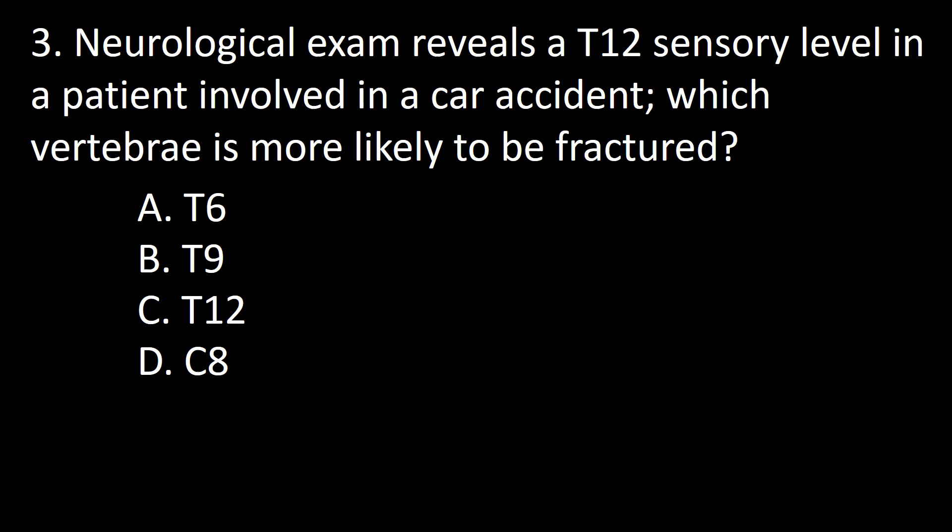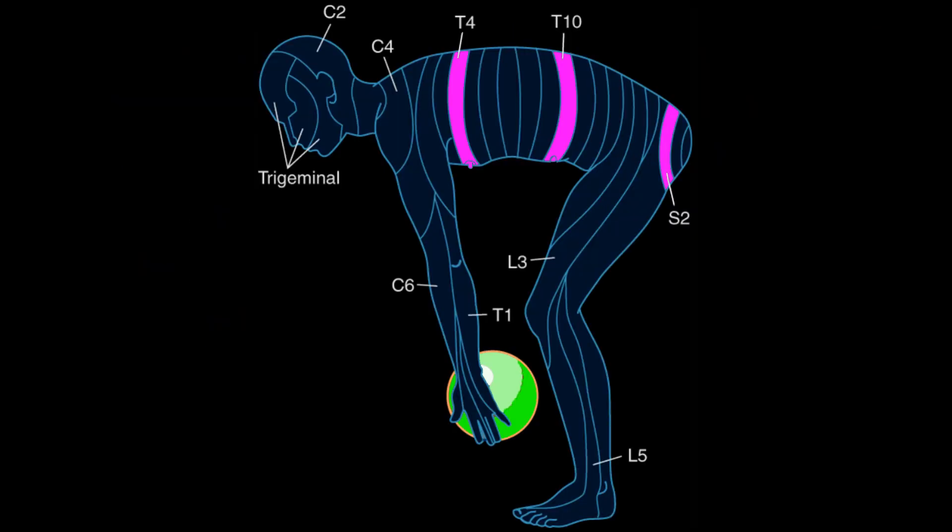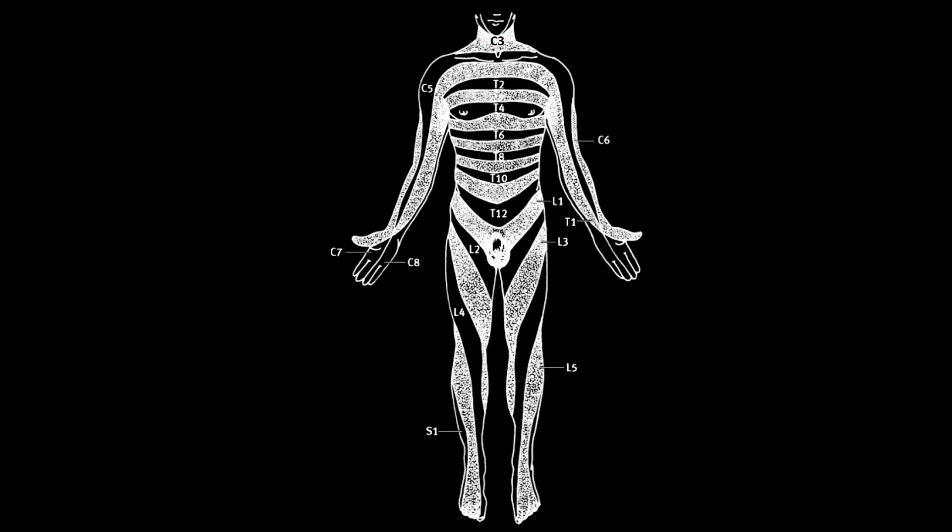Next question: neurological exam reveals a T12 sensory level in a patient involved in a car accident. Which vertebra is more likely to be fractured — T6, T9, T12, or C8? This figure is a sensory dermatomal map. A sensory level at C3 implies that only C2 and cranial nerve sensation are present. Remember, there is no C1 dermatome. The deficit is bilateral, so no pain, thermal, or discriminative sensation is present at C3 and below on both sides.